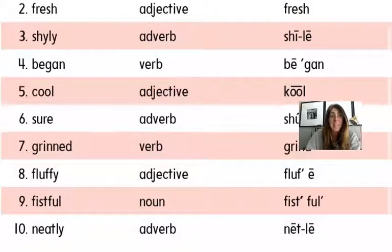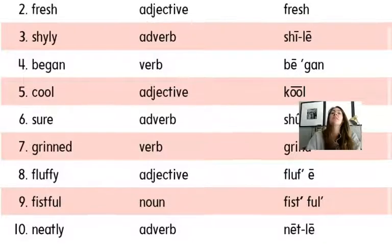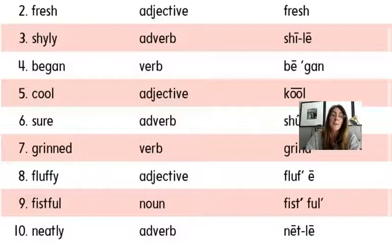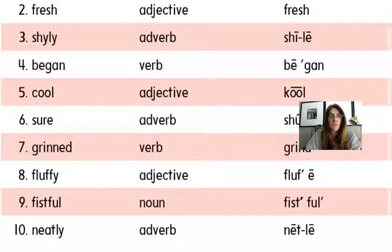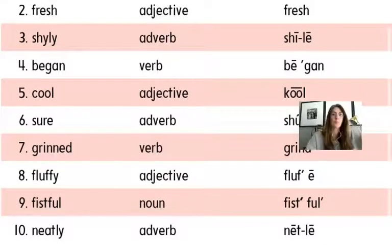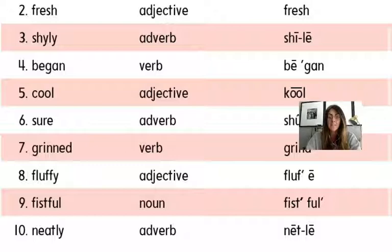Number ten is neatly. Neatly means you do something neat. By adding L-Y, that makes it an adverb. For example: I neatly put the recess toys back where they belong, or you put away all of your clothes neatly. If you look at the pronunciation, you can see N-E with a long E, then T-T, then L-E. Neatly.